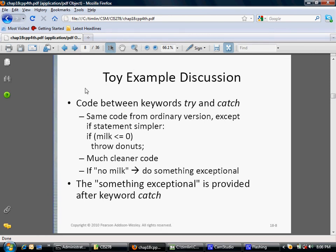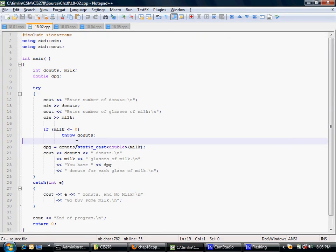In the toy example, the code between try and catch is the same code from the ordinary version, except we have the statement. We simplify the statement. We're just saying if the milk is less than or equal to zero, throw donuts, which will cause the program to branch. When I do this, all the rest of these commands here are skipped. It goes right down to the try-catch block.